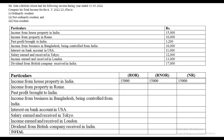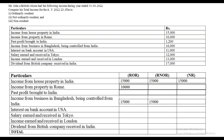Next, income from property in Rome. Rome is a foreign country, so only the first person will have to pay tax. Past profit brought to India — again, past profit, no one pays tax for it. Income from business in Bangladesh being controlled from India — it is controlled from India, so the first two people will need to pay tax. Interest on bank account in USA — again, USA is foreign income, so only the first person pays tax. Salary earned and received in Tokyo — again, foreign income, only the first person pays tax.